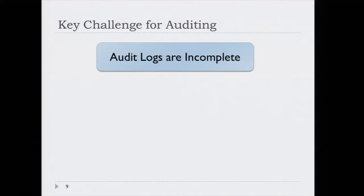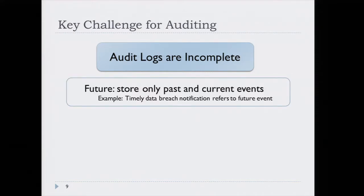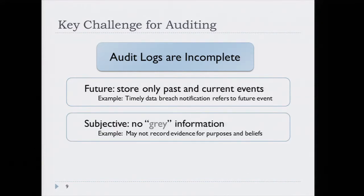This is in contrast to how access control decisions are made. When we try to log into our machine, the computer checks our credentials and comes back with a yes/no decision. In contrast, since audit logs are incomplete, we do not always expect the auditing algorithm to give a yes/no answer. We would like an algorithm that gracefully deals with incompleteness. There are many sources of incompleteness: there is no information about the future in the log, and yet the future is relevant for determination of things like timely data breach notification.